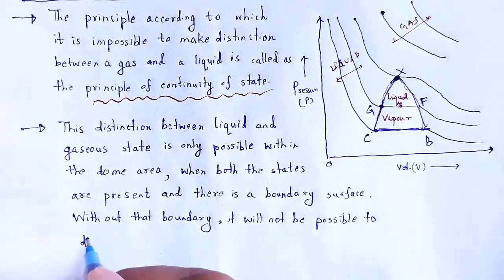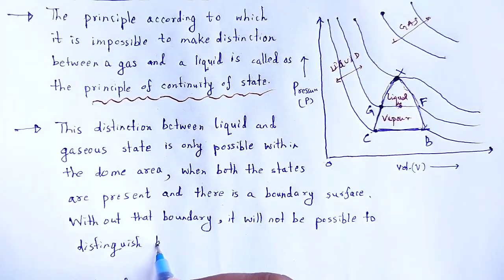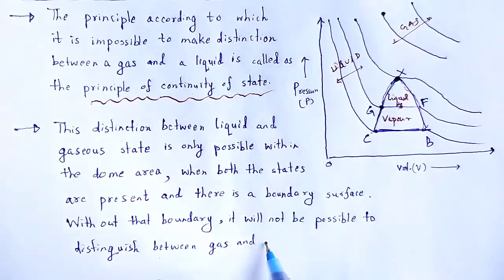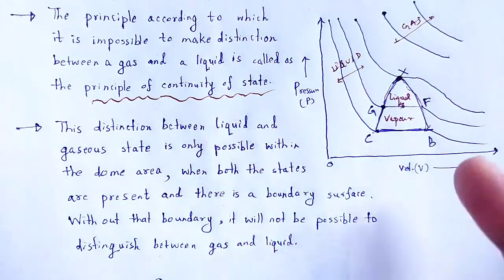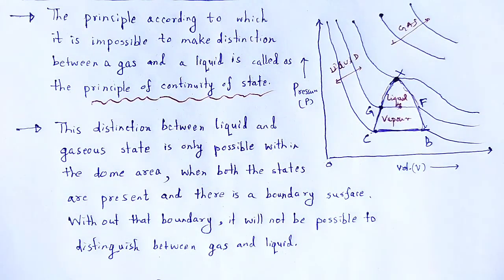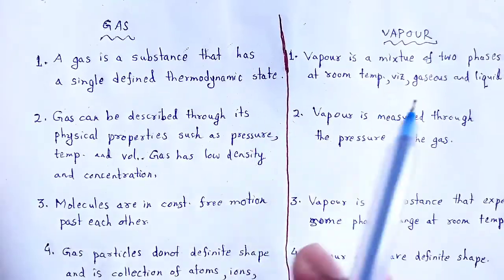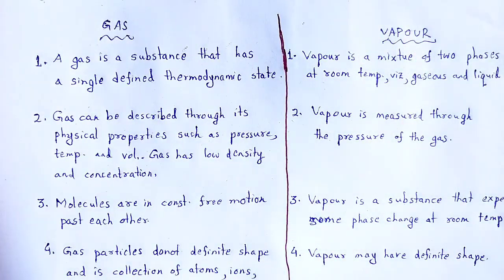To distinguish between gas and the liquid, here the principle of continuity of state applies. Now we discuss the basic difference between vapour and gaseous state. We write it through two columns: the first column is gas, the second column is vapour, and the points based upon how these two are differentiated from each other.